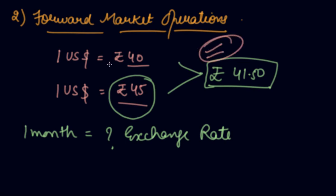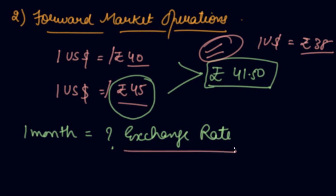In this way, both parties are hedging their risk. For instance, if after one month the US dollar is Rs.38, then the seller would be at risk. Since neither party knows what the exchange rate will be, both reduce their risk by deciding on one common exchange rate. These are the forward market operations: on some future date, you sign a contract fixing the exchange rate — this is called the forward exchange rate.